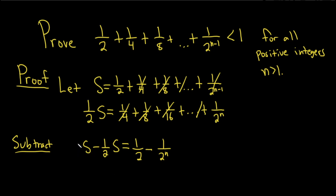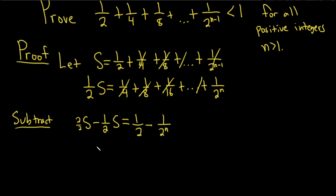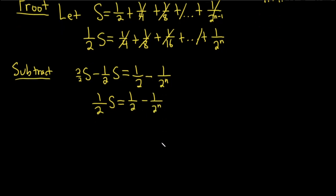Good stuff. This is really (2/2)S - (1/2)S. So when we subtract that, you're just going to get (1/2)S = 1/2 - 1/2^n. And then let's go ahead and multiply by 2 now. So when we do that, we'll get S equals, so if we multiply the 1/2 by 2, we get 1 minus, and then I'll show the step here, we get 2/2^n.